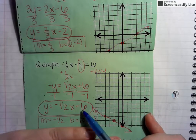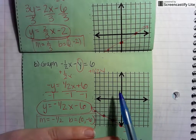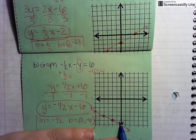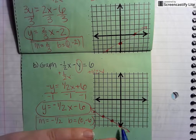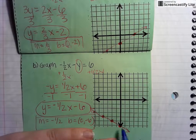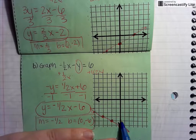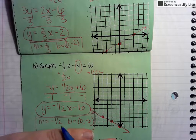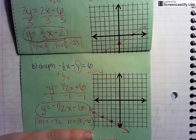My b value is going to be (0, negative 6). So I plot my first point at (0, negative 6). I can either go down 1 and to the right 2 — that's a negative 1 and a positive 2, which still gives me a negative slope. Or I could go up 1 and to the left 2 — up 1 positive, left 2 negative — repeating that pattern. My slope is negative and it's facing a negative direction, so I am correct.